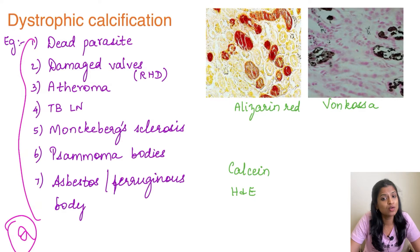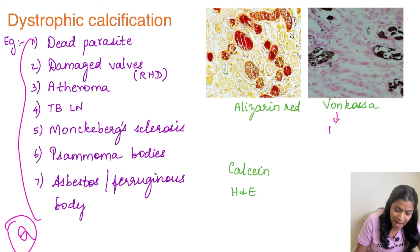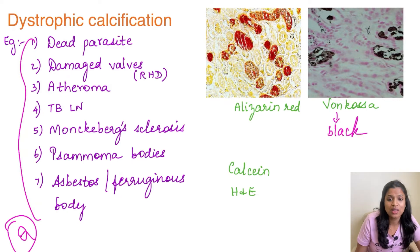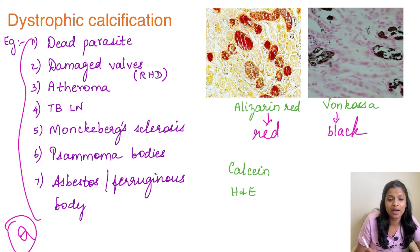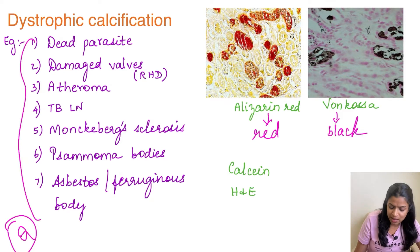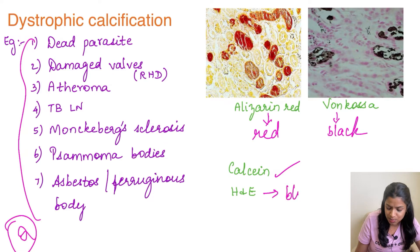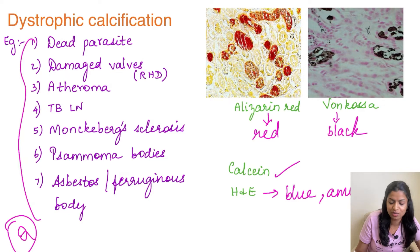The special stain used for calcium — the most important one is Von Kossa stain, which stains calcium black in color. The other stain is Alizarin red, which stains calcium red in color. We also have calcein stain, and on routine H&E stain, calcium appears as a bluish, basophilic amorphous kind of material.